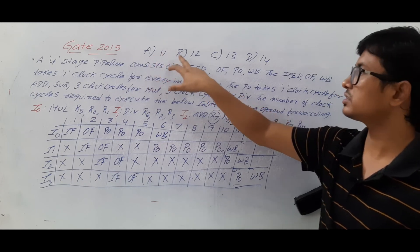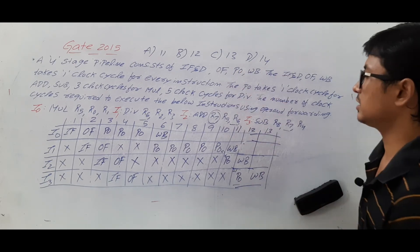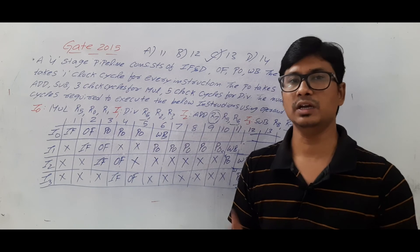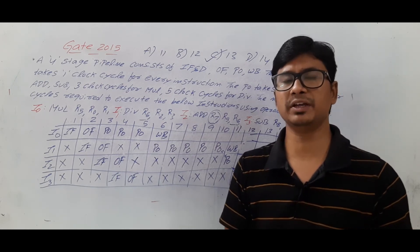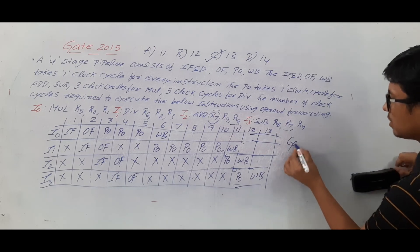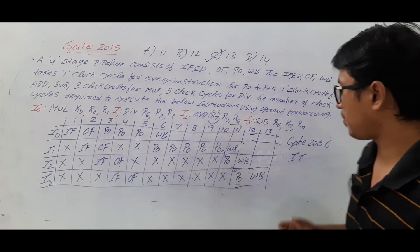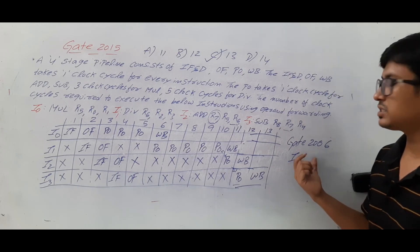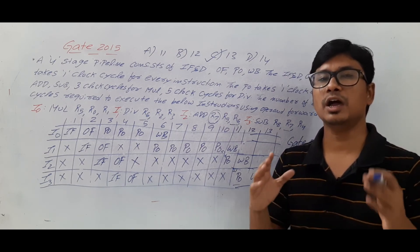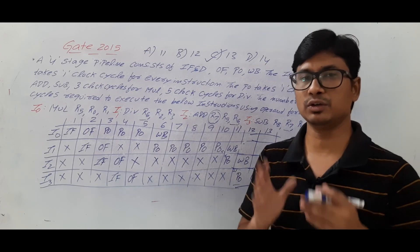The options given are: A) 11 clock cycles, B) 12 clock cycles, C) 13 clock cycles, D) 14 clock cycles. The correct answer is option C — 13 clock cycles. I hope you have understood how I solved the GATE 2015 question on operand forwarding. As a small task, there is a similar question in the GATE 2006 IT branch paper. I request you to go and solve it yourself.